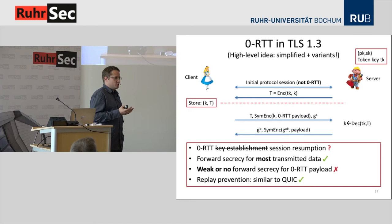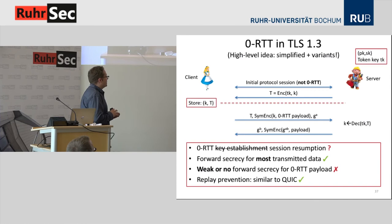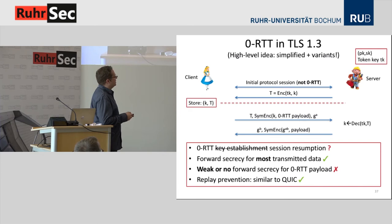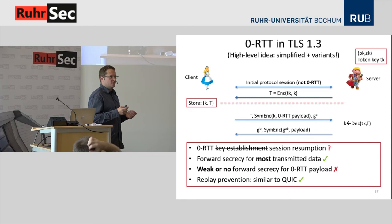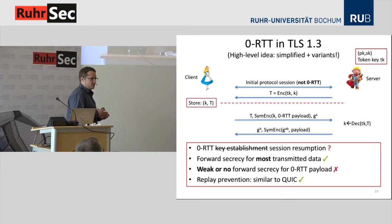What does TLS 1.3 achieve? First, it's not really a zero-round-trip-time key establishment but a zero-round-trip-time session resumption — so to some degree we're comparing apples and oranges, but the overall goal is similar. We get forward secrecy for most transmitted data, but only a very weak form of forward secrecy for the zero-round-trip-time payload, which depends on the lifetime of the token key. The more often you replace this token key, the more often a zero-round-trip-time attempt fails and you have to do a full handshake again. Preventing replay attacks works similarly to QUIC — the server memorizes all values, which is optional.